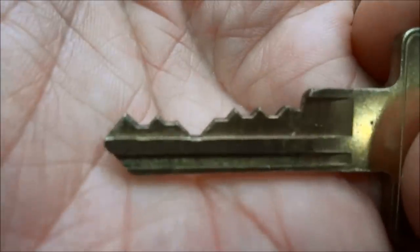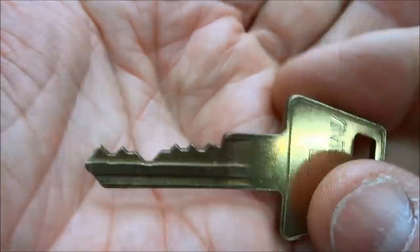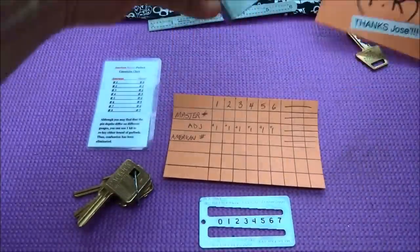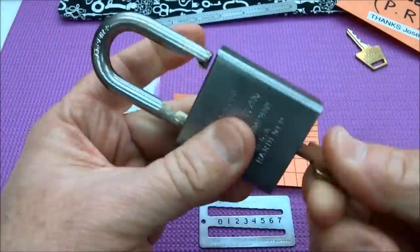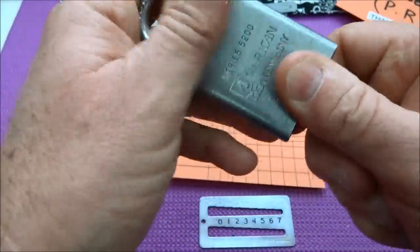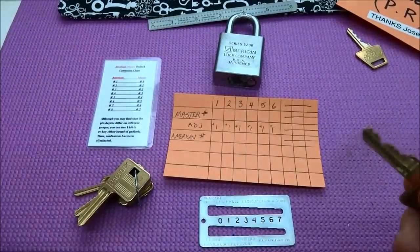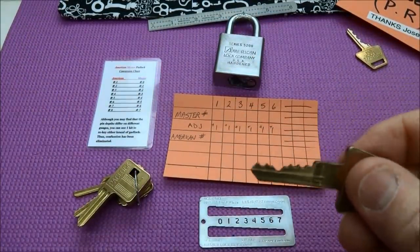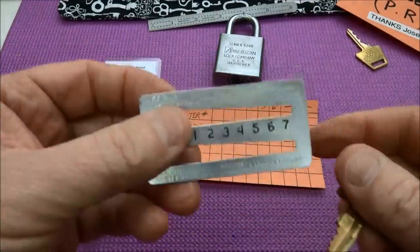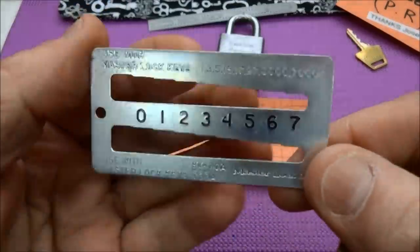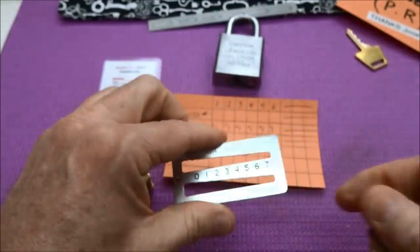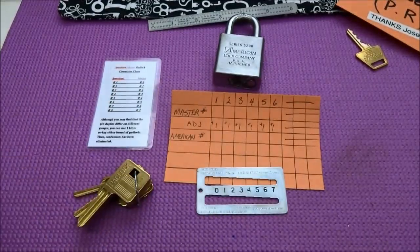This is an American padlock that I have here and this is the key, and I want to duplicate it. Before I can use those depth and space keys, I really need to decode this key. The way that we do that is we're going to need some kind of key gauge.